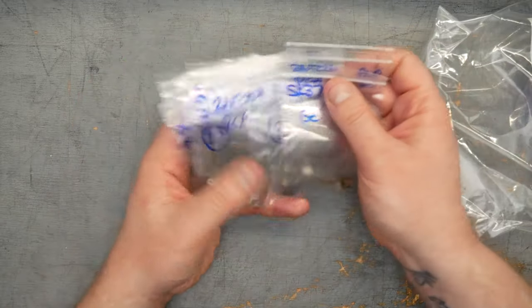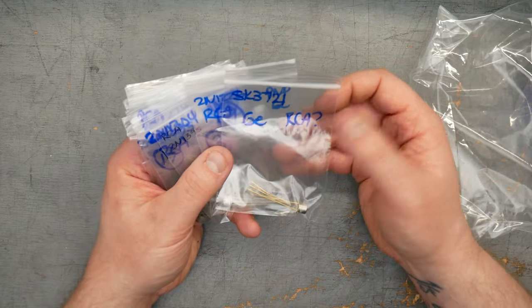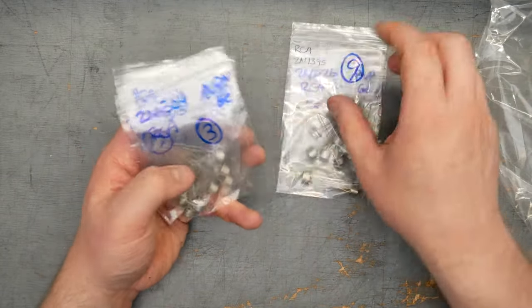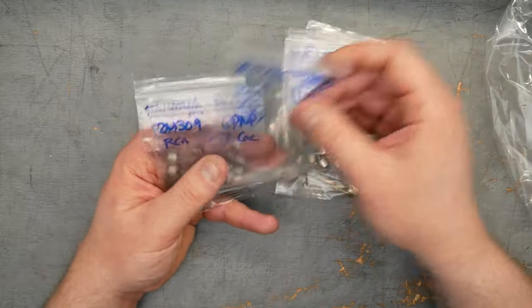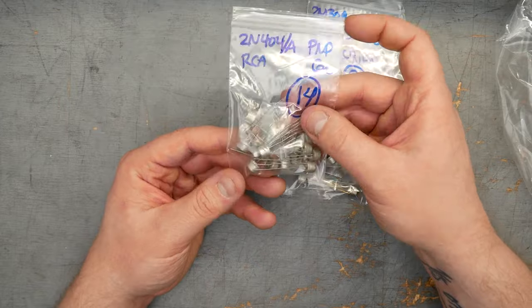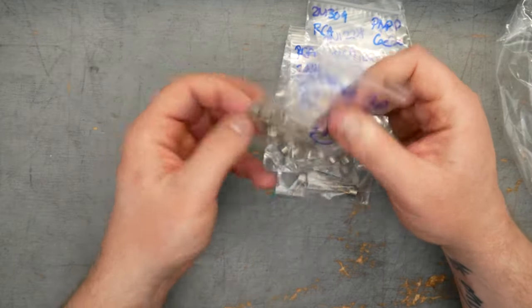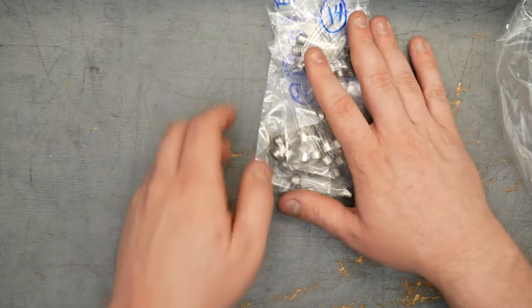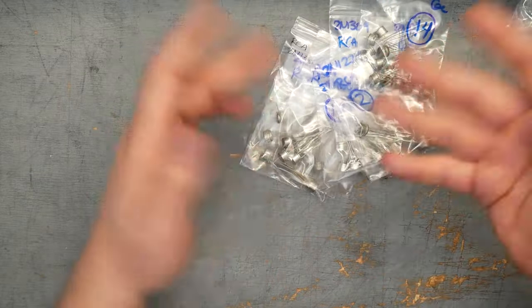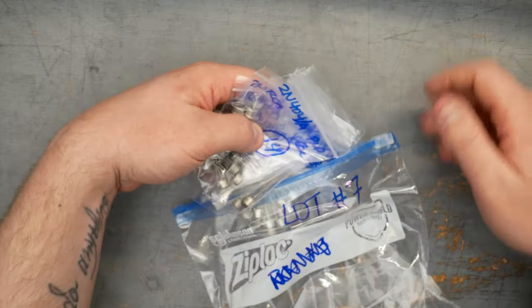Lot number seven. It looks like more RCAs. So SK3721, 1226, 1395, 1304, 1605, 1224, 1309, and then some 20404s. There's 14 of these 2N404s. That's a nice addition there. So these are 2N404s, or excuse me, these are all RCA Germanium transistor. And this is lot number seven.